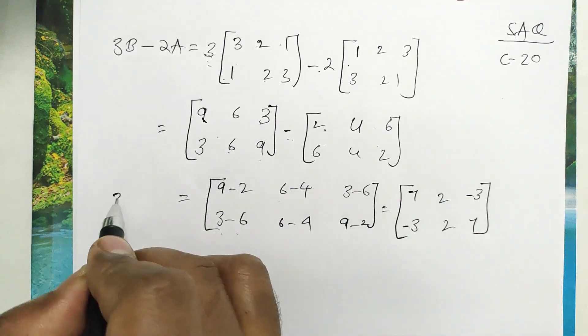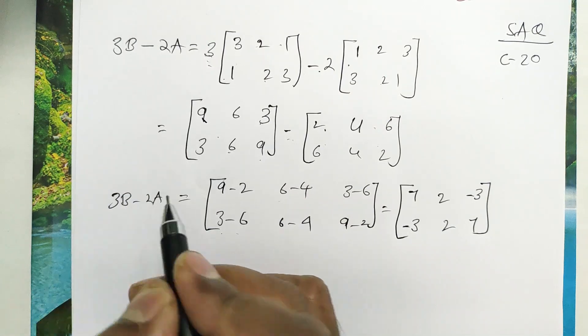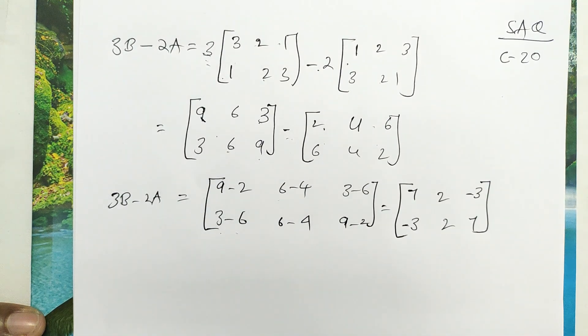Then equal to, 3B minus 2A equal to [7, 2, -3; -3, 2, 7]. Thank you for watching my video.